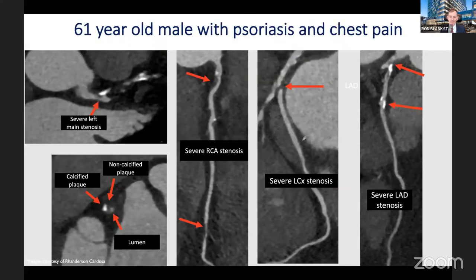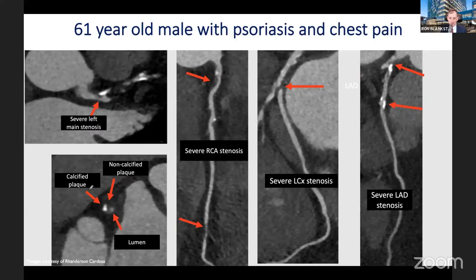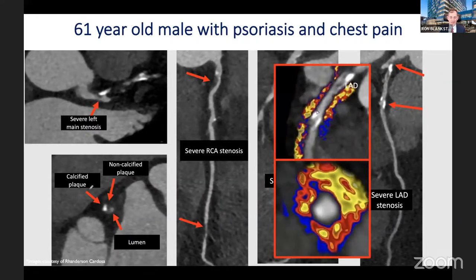The second case is a 61-year-old male with psoriasis and chest pain who had a normal vasodilator SPECT but continued to have chest discomfort. Coronary CTA revealed three-vessel disease with severe left main stenosis, severe stenosis in the LAD, left circumflex, and RCA, plus a large amount of calcified and non-calcified plaque. Psoriasis is a well-recognized risk factor for coronary disease and inflammation. He ultimately needed CABG, and imaging also demonstrated coronary inflammation via fat attenuation analysis.